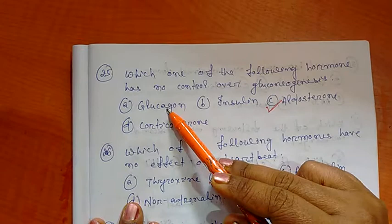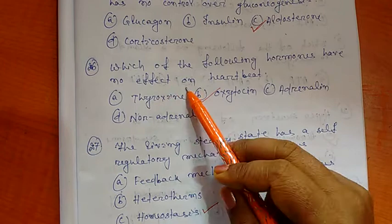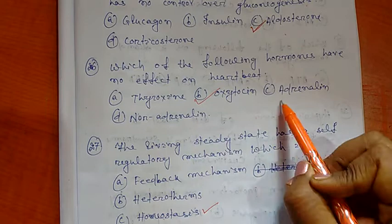Question 26: Which of the following hormones have no effect on heartbeat? Options are A) Thyroxine, B) Oxytocin, C) Adrenaline, D) Noradrenaline. So the right option is oxytocin.